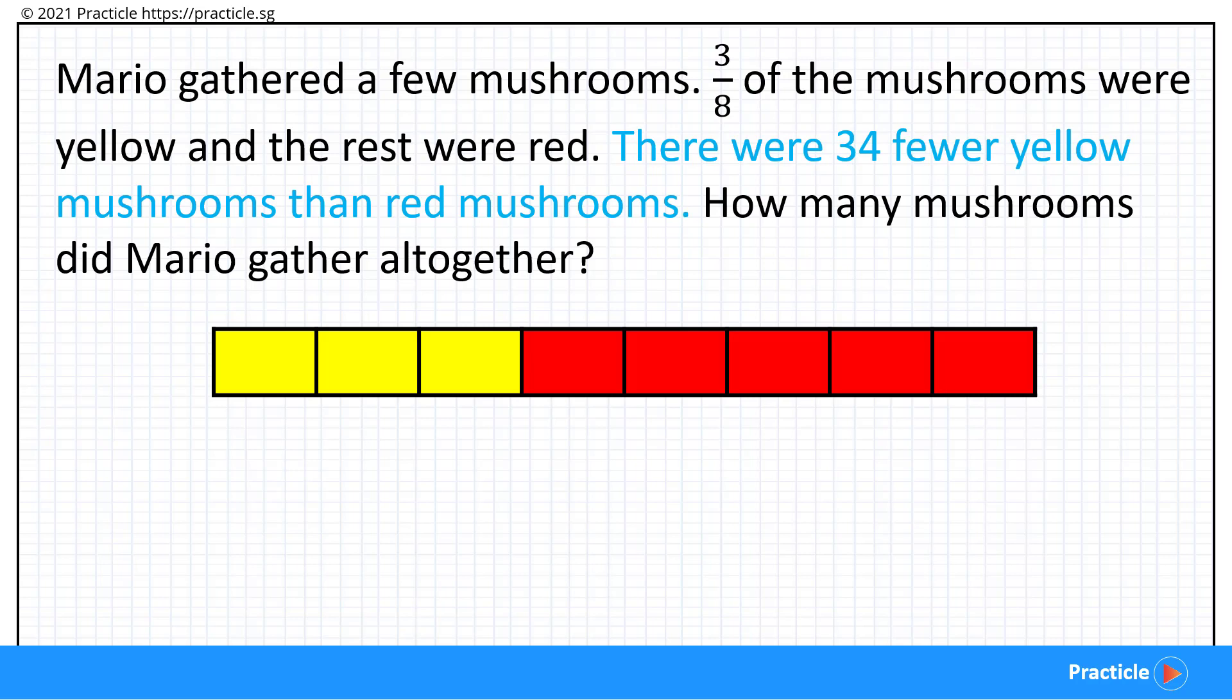When we subtract the 3 parts that represent the yellow mushrooms from the 5 parts that represent the red mushrooms, 5 minus 3 equals 2. Do you get that? And now we know that these 2 parts represent the difference of 34 mushrooms. Great!